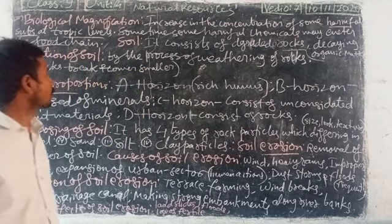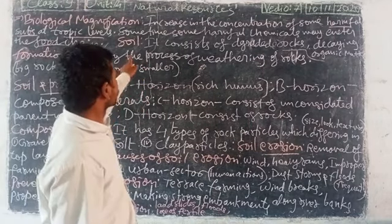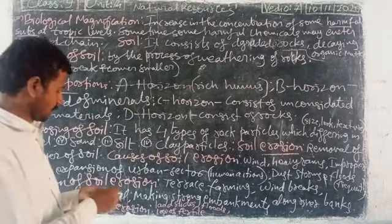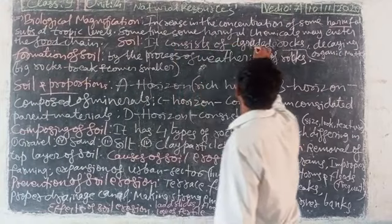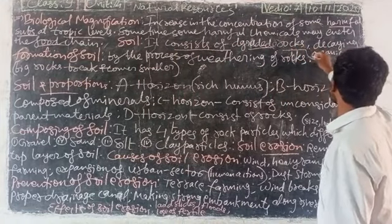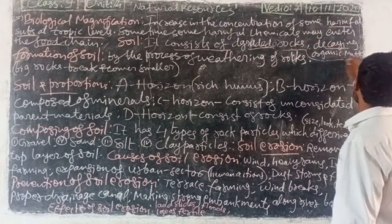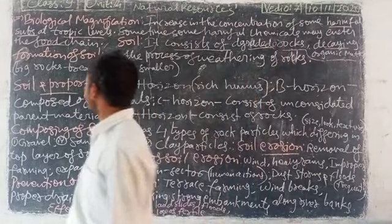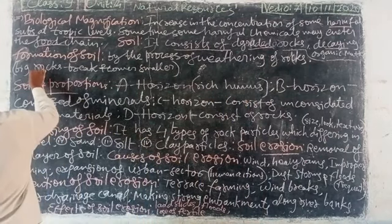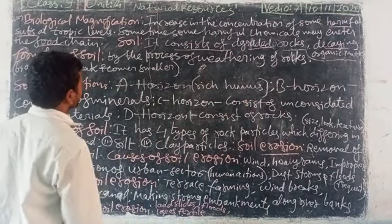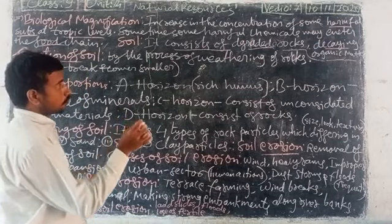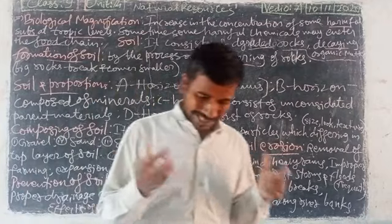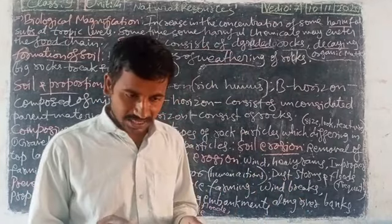What is soil? Soil consists of degraded rocks and decaying organic matter. The formation of soil occurs by the process of weathering of rocks.